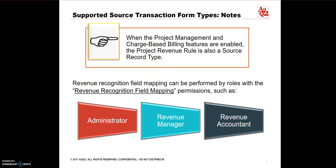When the project management and charge-based billing features are enabled, the project revenue rule is also a source record type. You can only do the revenue recognition field mapping if you have one of the following roles with the revenue recognition field mapping permission: Administrator, Revenue Manager, and Revenue Accountant.